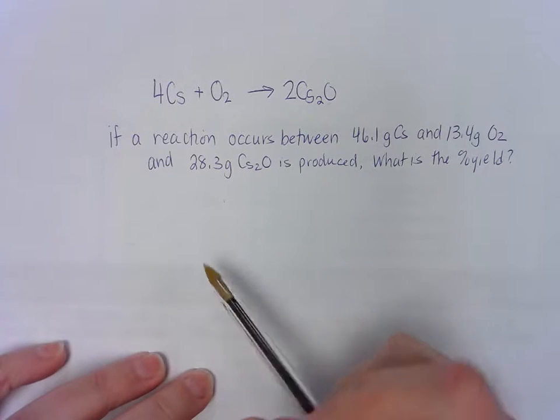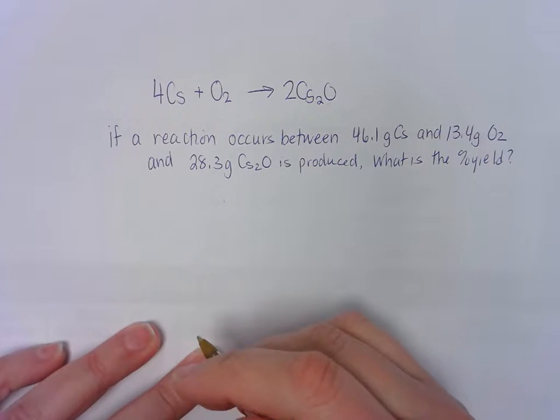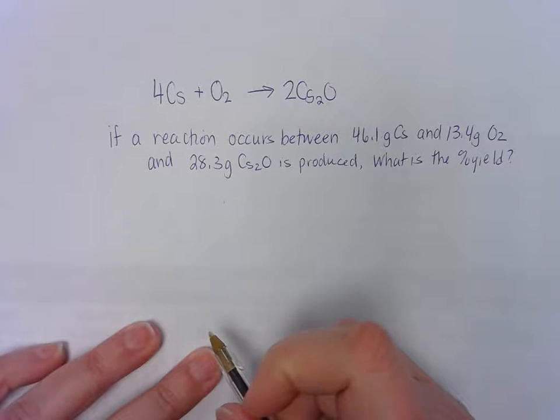All right, here's a sample problem. It says, if a reaction occurs between 46.1 grams of cesium and 13.4 grams of oxygen and 28.3 grams CS2O is produced, what is the percent yield?